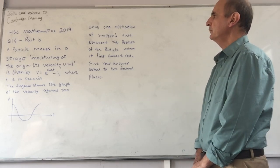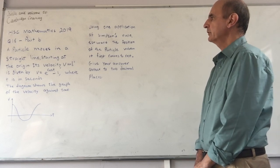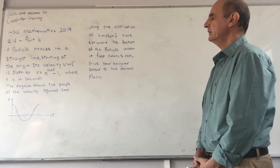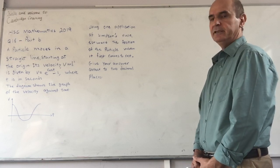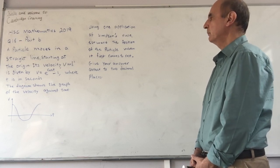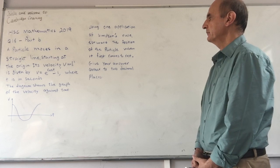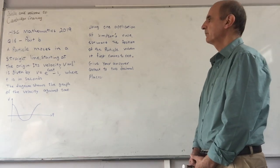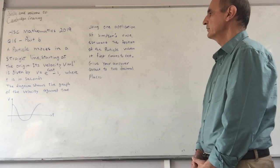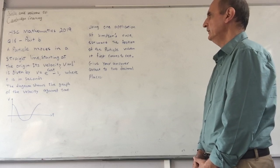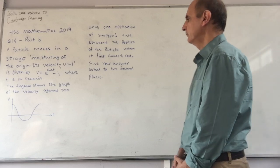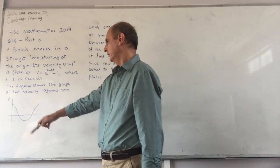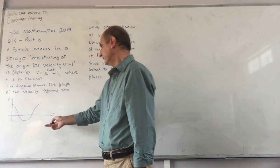A particle moves in a straight line starting at the origin. Its velocity v in meters per second is given by v equals e to the power of cos t minus 1, where t is in seconds. The diagram shows the graph of the velocity against time.